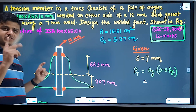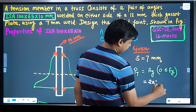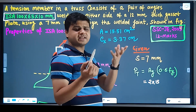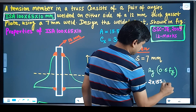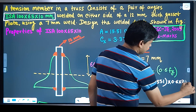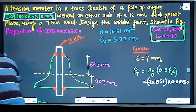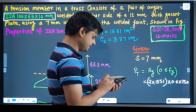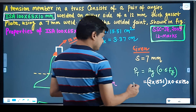Since we have two angles, the total gross area is 2 × 15.51 cm² = 31.02 cm², which converts to 3102 mm². Multiplying by the permissible stress 0.6 × Fy, where Fy = 250 MPa: 3102 × 0.6 × 250 gives us the load capacity.